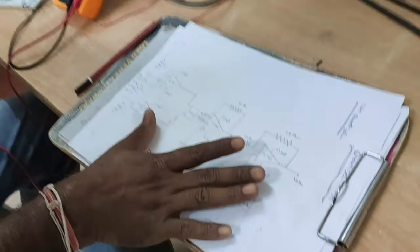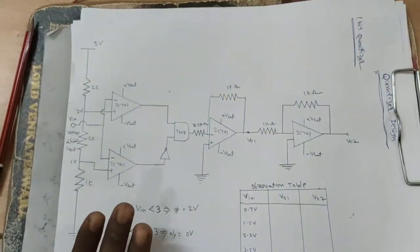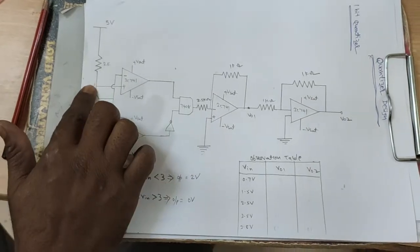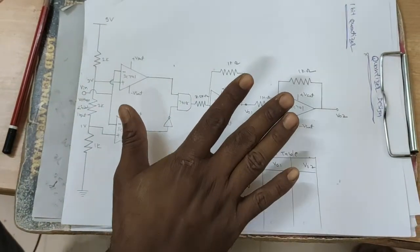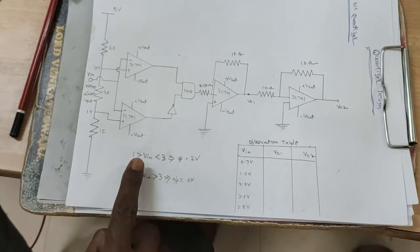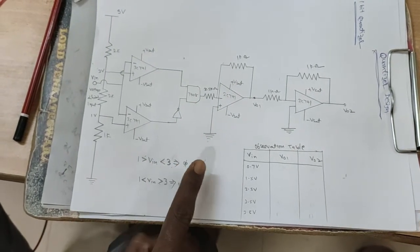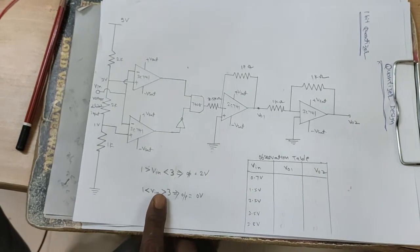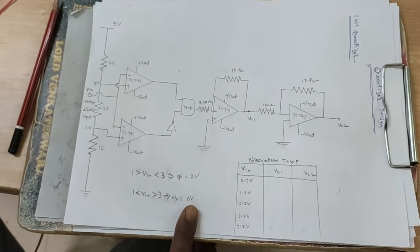This is the structure of the 1-bit quantizer. Here, two levels are there: 1 volt and 3 volts. We are forming a uniform quantizer. This means when V in is between 1 and 3 volts, the output is 2 volts. When V in is less than 1 volt or greater than 3 volts, the output is 0 volts.